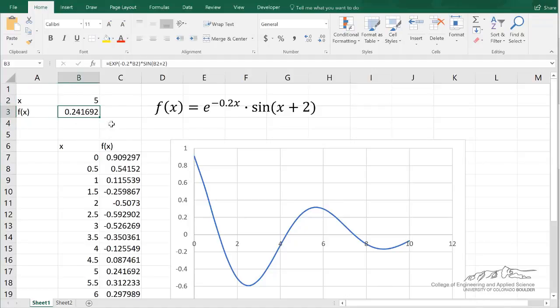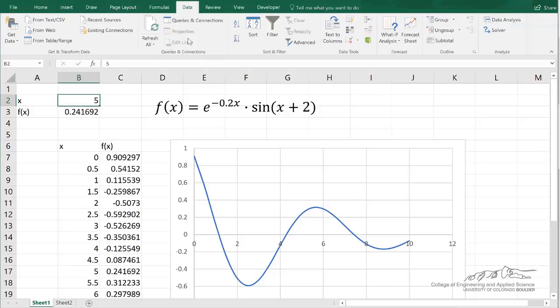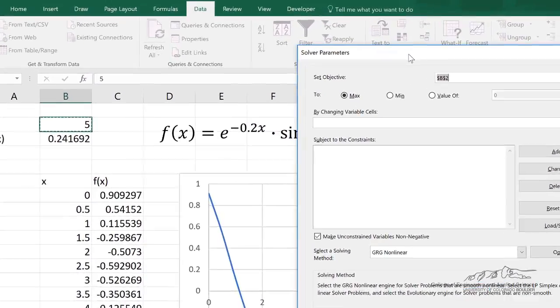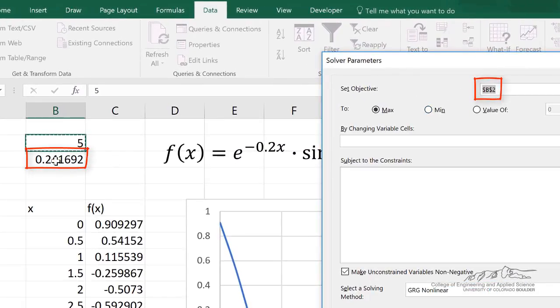And now we want to find the minimum. Now, the solver tool, just like the goal seek tool, needs an initial guess, which we've already got. So I'm going to go ahead and go into data solver. And I'm going to set objective, which is going to be f of x. And we're going to set that to a minimum by changing variable cell B2. So let's go ahead and do solve.